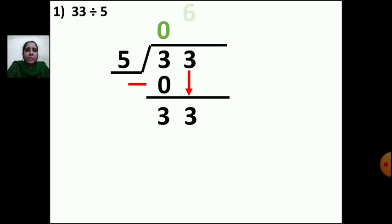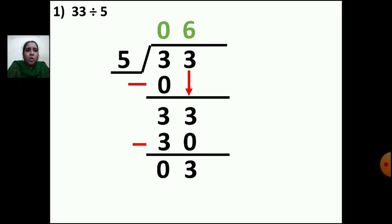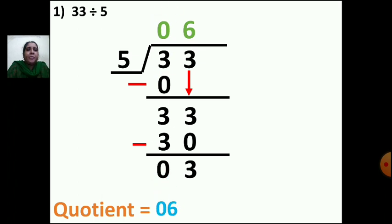So you write 6 up and 30 below 33. That is 5 sixes are 30. Put the minus sign and draw one line. Now subtract from units: 3 minus 0 is 3, and 3 minus 3 is 0. So the quotient is 6 and the remainder is 3. This is how you do the sum.